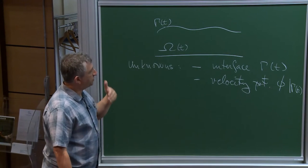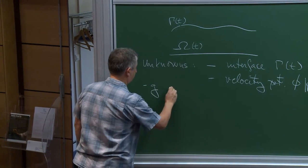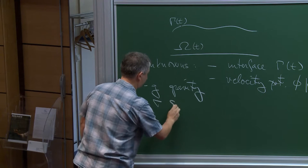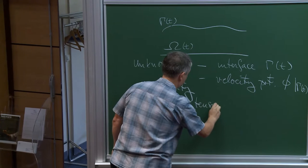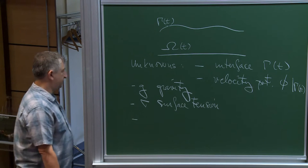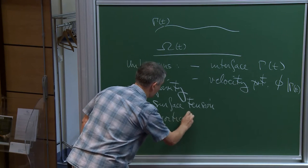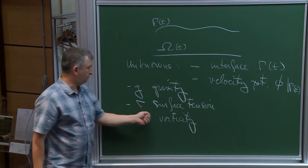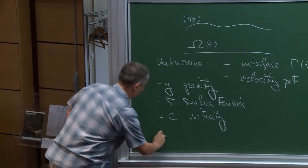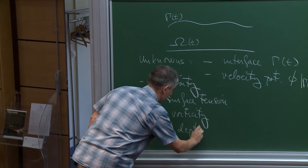In studying this evolution there are a couple of parameters I introduced last time. One parameter is g, which is gravity. The second parameter is sigma, the surface tension. The third parameter, used in one case at least, is c, which I'll use for the vorticity — one of the models is a fluid with constant vorticity rather than being irrotational. The last parameter is h, the depth of the fluid.